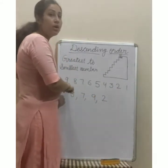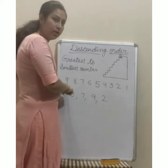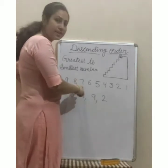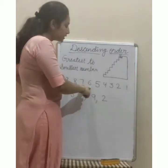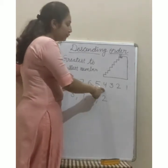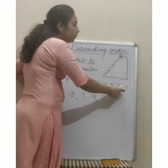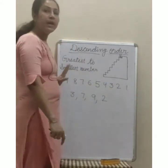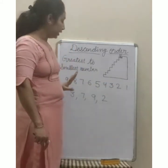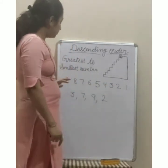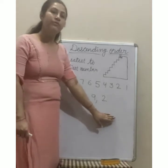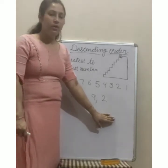देखो: 9 है, फिर 8, फिर 7, फिर 6, फिर 5, फिर 4, 3, 2, 1। यही है backward counting। We will solve this। Okay?